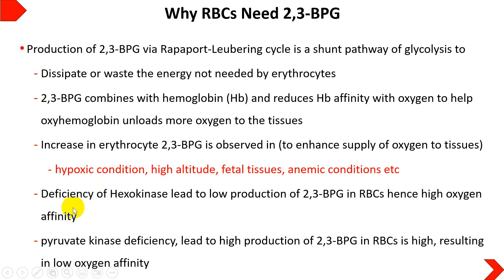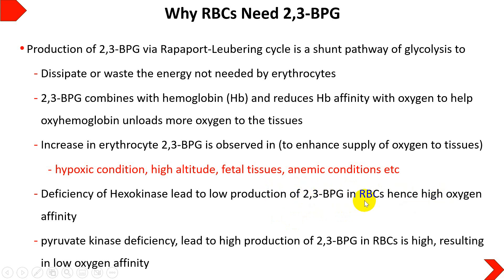A pathological condition arises if there is a deficiency of hexokinase — the first regulatory enzyme of glycolysis. Hexokinase deficiency leads to low production of 2,3-BPG. Since 2,3-BPG has an inverse relation with hemoglobin-oxygen affinity, low 2,3-BPG means high oxygen affinity. As a result, oxygen is tightly bound to hemoglobin and is not easily unloaded to the tissues, making it difficult for tissues to receive adequate oxygen.